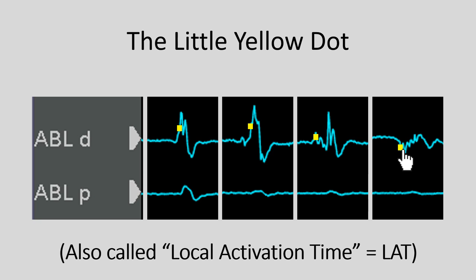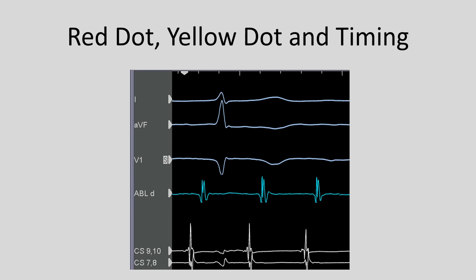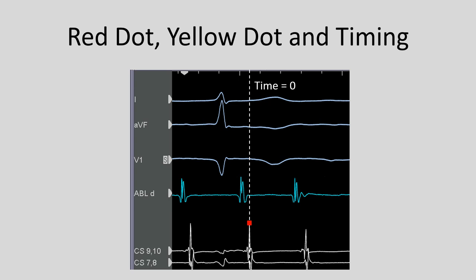This yellow dot — whether the computer assigns it or you adjust it — is known as the local activation time. That is the timing point at the location where your mapping catheter is currently located. To compare the red dot and yellow dot: the red dot shows the reference time zero on that beat; the yellow dot is compared to that time zero. If the electrogram at the ablation catheter is later than your reference, you get a positive number. If you find a location where your signal is earlier, you get a negative number.